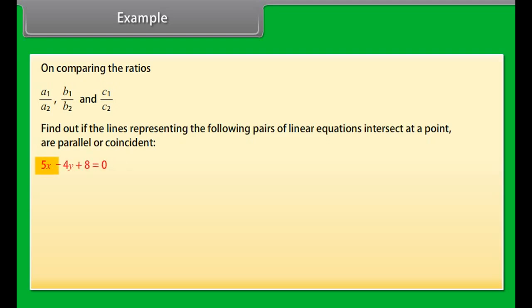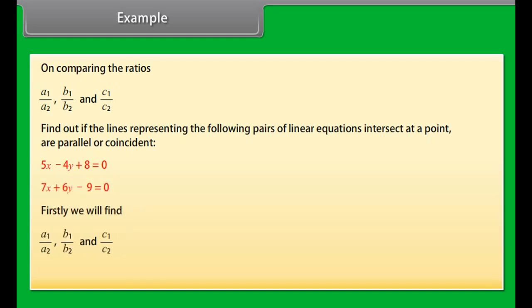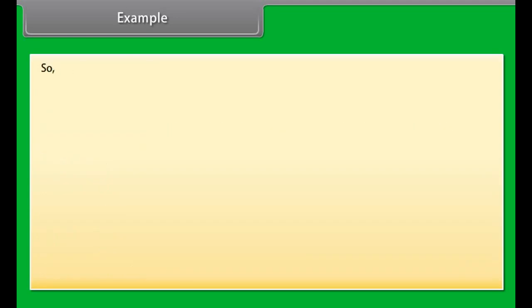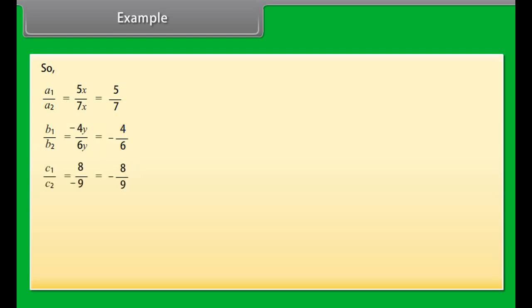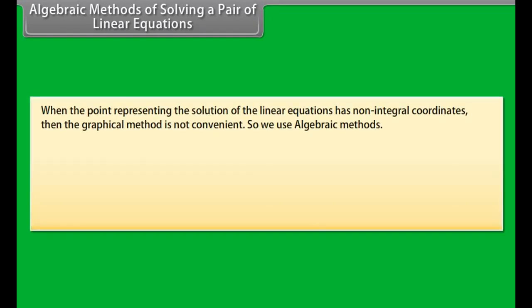Example. On comparing the ratios A1/A2, B1/B2, and C1/C2, find out if the lines representing the following pairs of linear equations intersect at a point, are parallel, or coincident: 5X − 4Y + 8 = 0 and 7X + 6Y − 9 = 0. We find A1/A2 = 5/7, B1/B2 = −4/6, and C1/C2 = 8/−9 = −8/9. Since A1/A2 ≠ B1/B2, the lines will be intersecting.